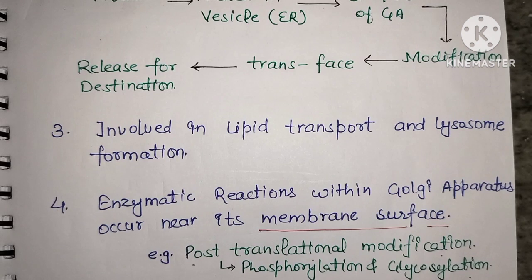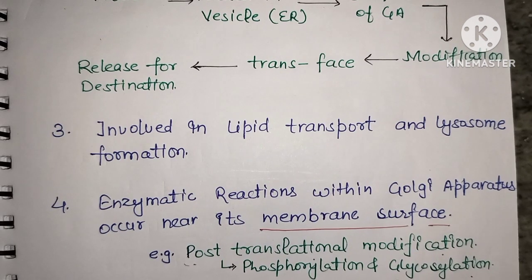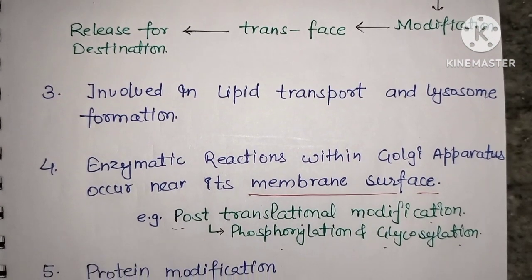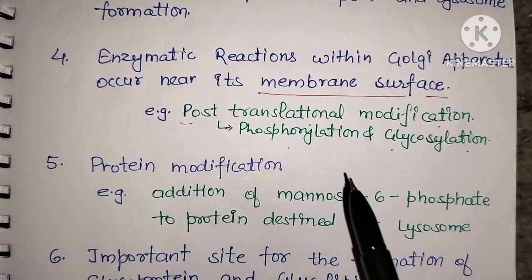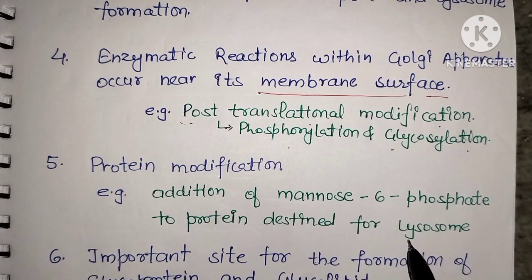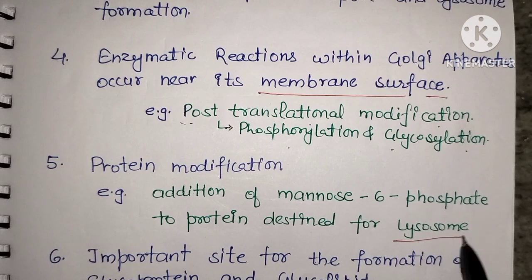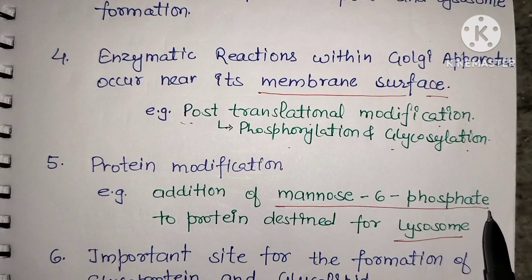Post-translational modifications performed in the Golgi apparatus include phosphorylation, where a phosphate group is attached, and other modifications. Protein modification is another key function — for example, proteins destined for lysosomes receive a mannose-6-phosphate carbohydrate tag that directs them to the lysosome.